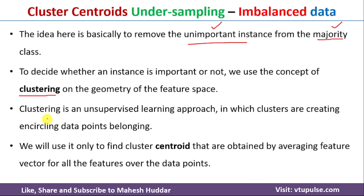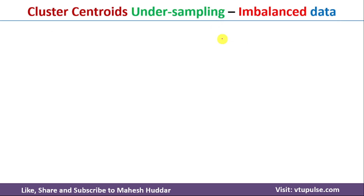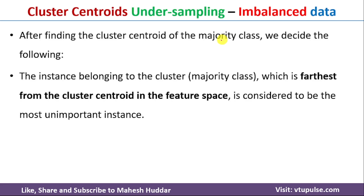Once we create these clusters, we consider the centroid of each cluster. Based on this centroid we decide whether an instance is important or not. If it is not important we will remove it; if it is important we will retain it. The decision rule is: from a given cluster's centroid, we identify the farthest point — that particular point is not important and will be removed. So we select the far-away instances from the centroid as unimportant instances.